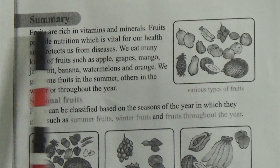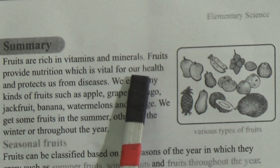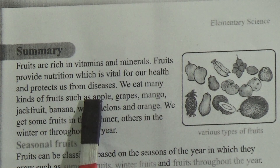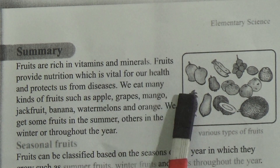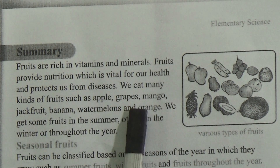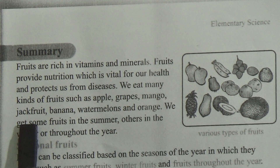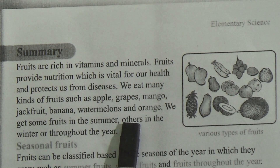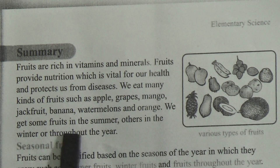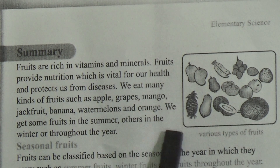Let's start our class. This is chapter 7: Food. Fruits are rich in vitamins and minerals. Fruits provide nutrition which is vital for our health and protect us from diseases. We eat many kinds of fruits such as apple, grapes, mango, jackfruit, banana, watermelons, and orange. We get some fruits in the summer and others in the winter.